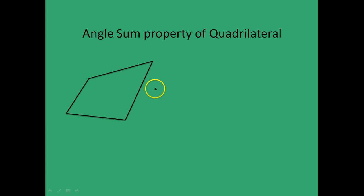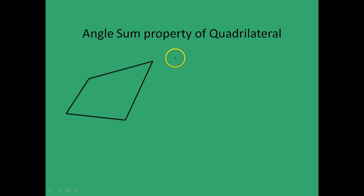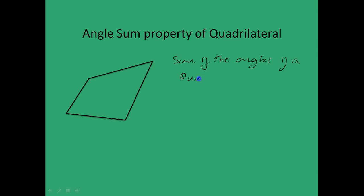We will start off with the first property, that is the angle sum property of a quadrilateral. The angle sum property stated briefly: the sum of the angles of a quadrilateral is 360 degrees.